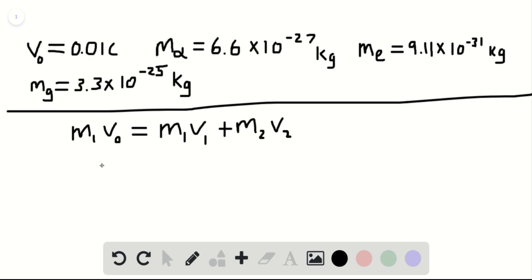So there's our momentum conservation. Using the same concept, we have energy conservation, which is one-half M1 V0 squared is equal to one-half M1 V1 squared plus one-half M2 V2 squared.